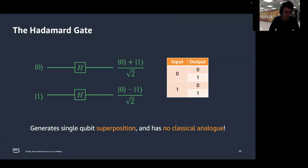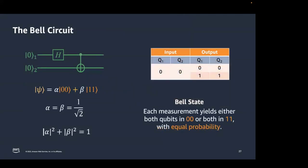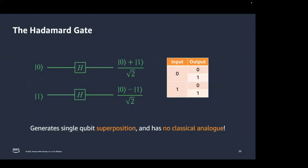Now let's talk about a two-qubit gate — the CNOT gate. With two qubits A and B, the CNOT gate generates entanglement: A is the control and B is the target. Based on the state of qubit A, the state of B changes. If A is |0⟩, B remains unchanged. If A is |1⟩, B flips. The truth table: |00⟩→|00⟩, |01⟩→|01⟩, |10⟩→|11⟩, |11⟩→|10⟩. This two-qubit gate has no classical analog.